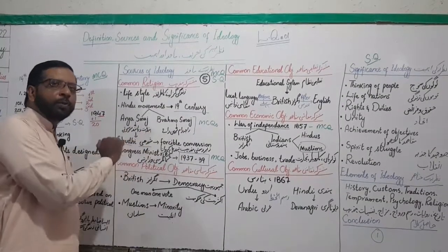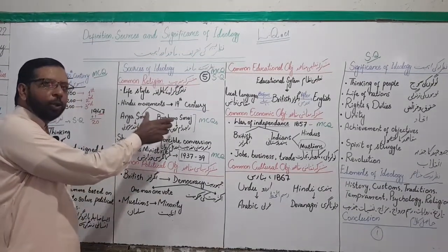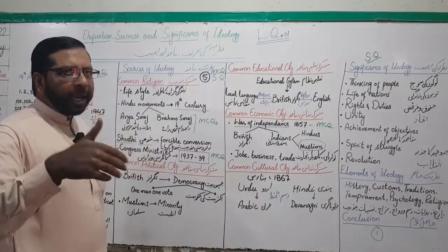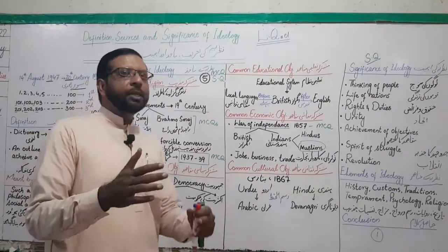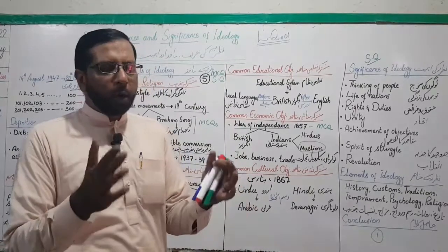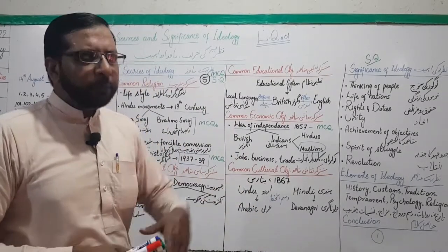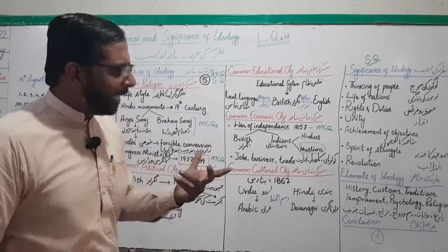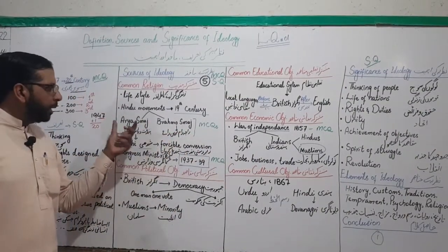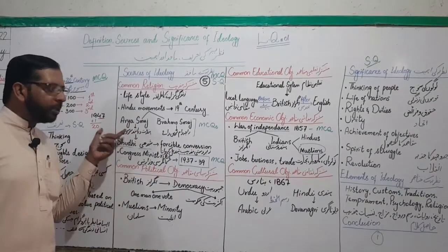Arya Samaj aur Brahmo Samaj — yeh do tahreekein thin jinaka buniyadi maqsad tha to propagate Hinduism — Hindu mazhab ki ishaaat, uski tableegh, aur Musalmano ko neecha dikhana. Brahmo Samaj shuru ki thi Raja Ram Mohan Roy ne, jabkeh Arya Samaj start ki thi Pandit Dayanand Saraswati ne. Yeh naam highlight kar lijiye, mark kar lijiye — MCQ ke taur par poochhe ja sakte hain.